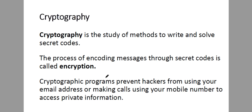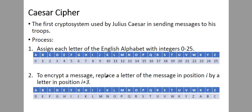The first crypto system we'll be discussing is the Caesar cipher, which is the first crypto system used by Julius Caesar in sending messages to his troops. The process contains two steps. Number one: assign each letter of the English alphabet with integers from 0 to 25. So A is 0, B is 1, C is 2, and so on until Z is 25.